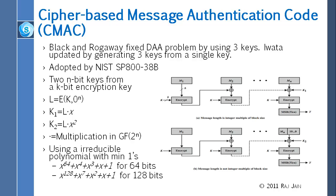For CMAC, you derive two new keys K1 and K2 using this Galois field multiplication from K. Depending on whether you had to pad or not, you use K1 or K2 — only one of the two. Whatever you get at the end, you take the most significant T-length bits to get your MAC or hash. You don't have to take all 160, 128, or 64 bits — you take whatever number you need from the front. The bits at the other end are much more predictable, so you always take from the front — most significant T-length bits. That's CMAC.